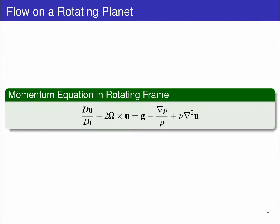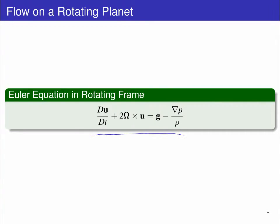Last time we derived the momentum equation for flow on a rotating planet. We drop the viscosity term and look at the rotating Euler equation.